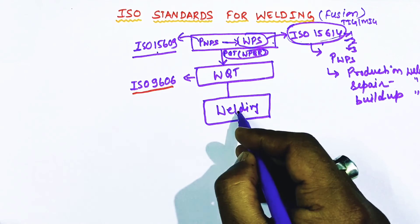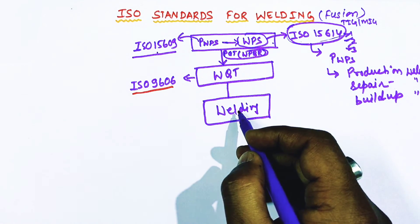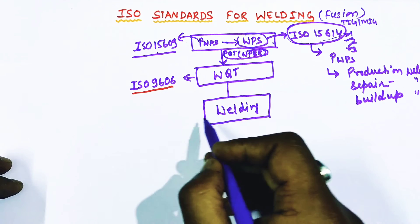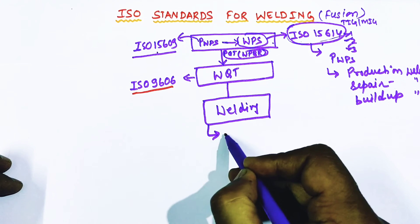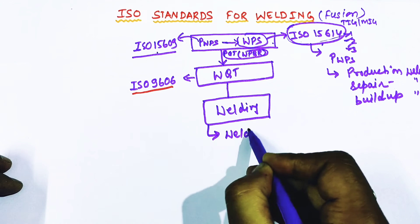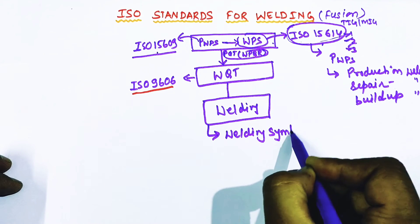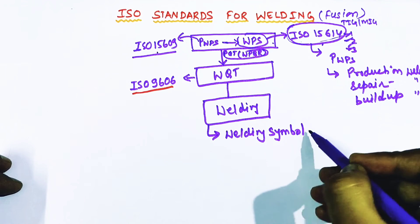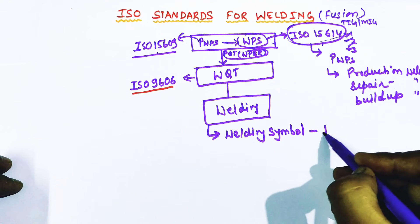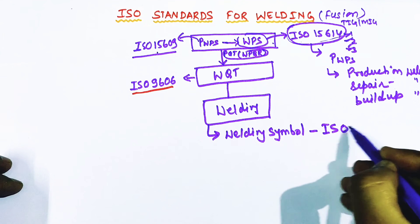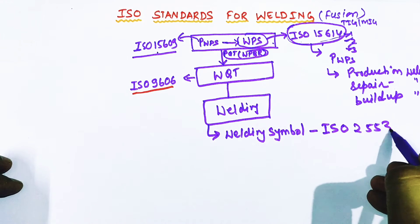After welder qualification test, when we start the actual welding, we need lots of codes. I will explain each code one by one. For welding symbols, which are part of design and welding activity, the applicable code is ISO 2553.